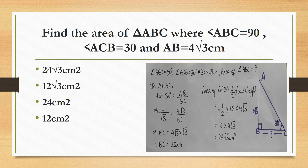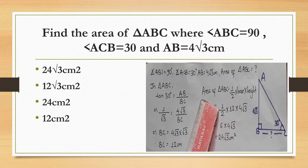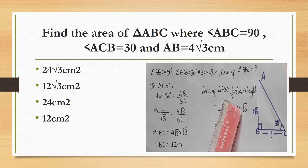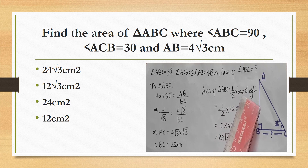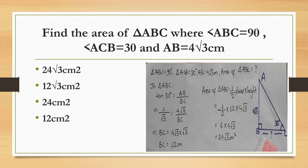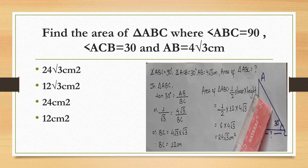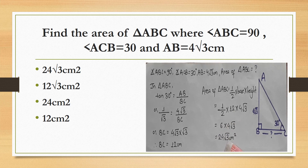BC = 12 cm, which is the base. Now the area of triangle ABC = (1/2) × base × height = (1/2) × 12 × 4√3 = 24√3 cm².